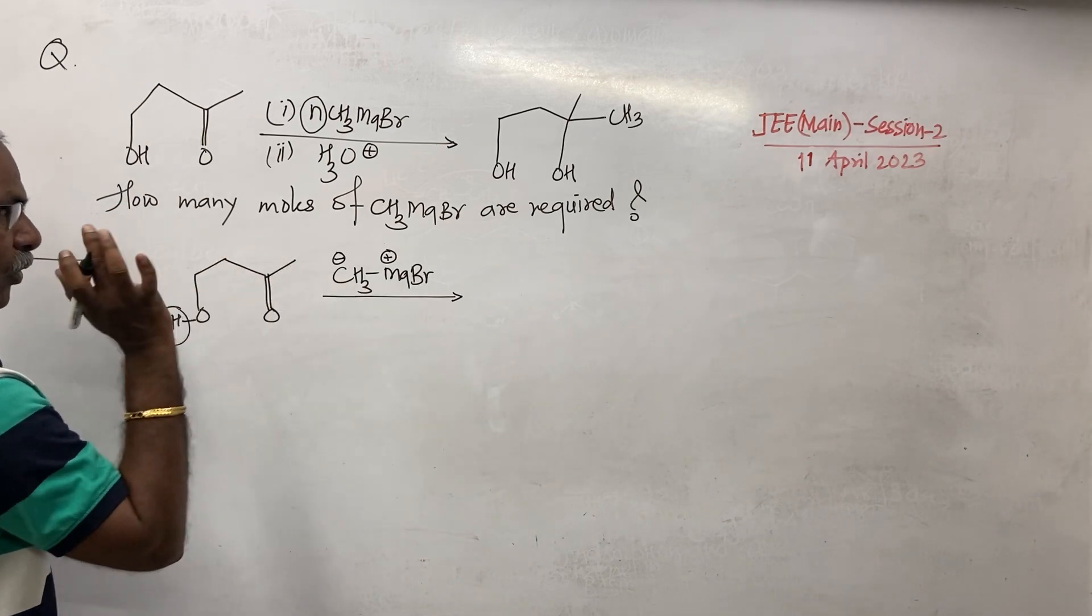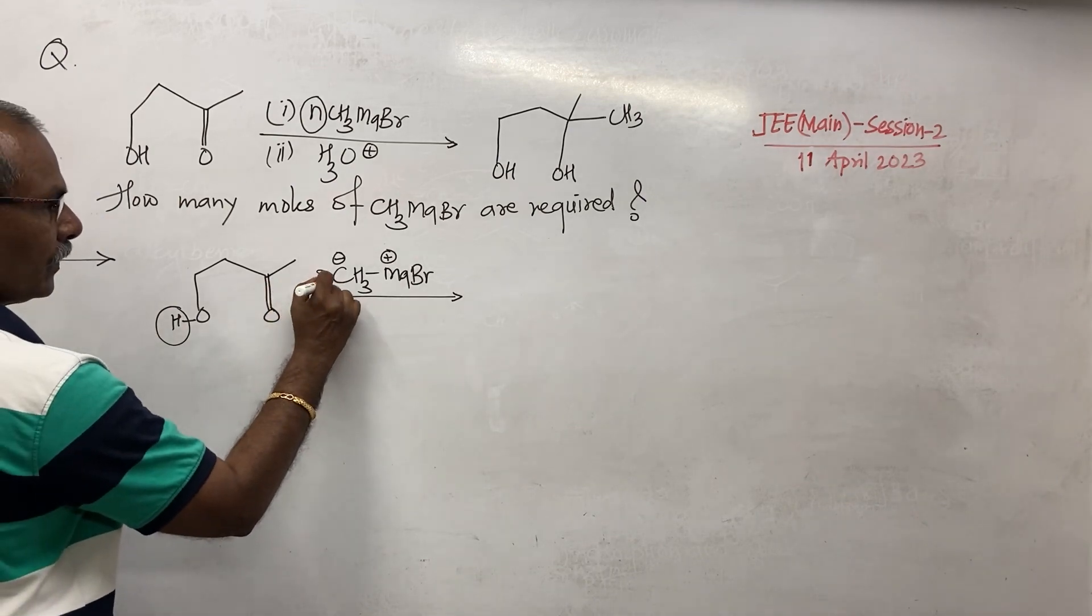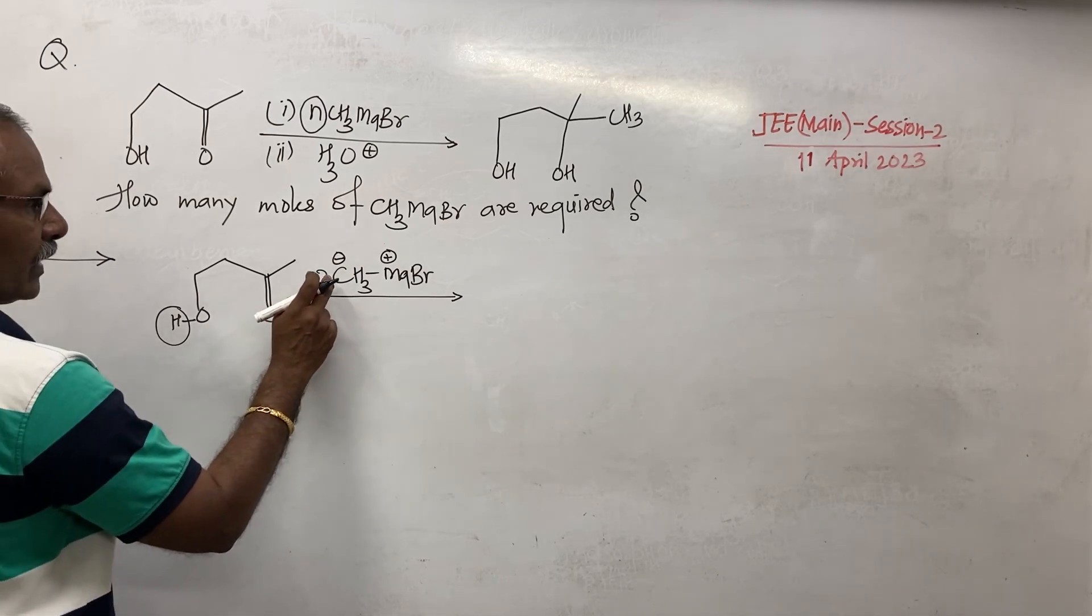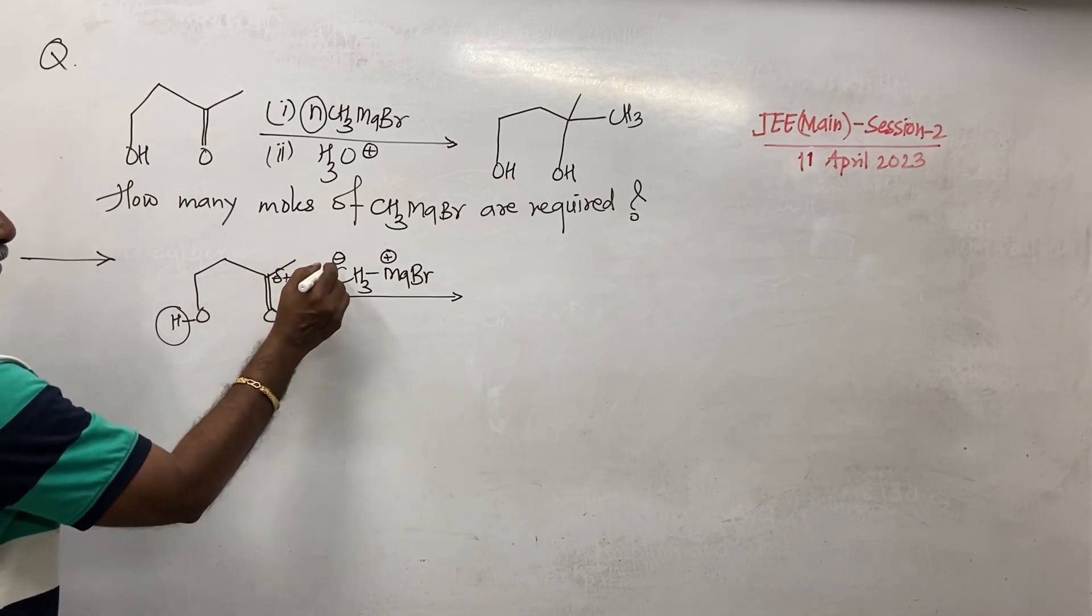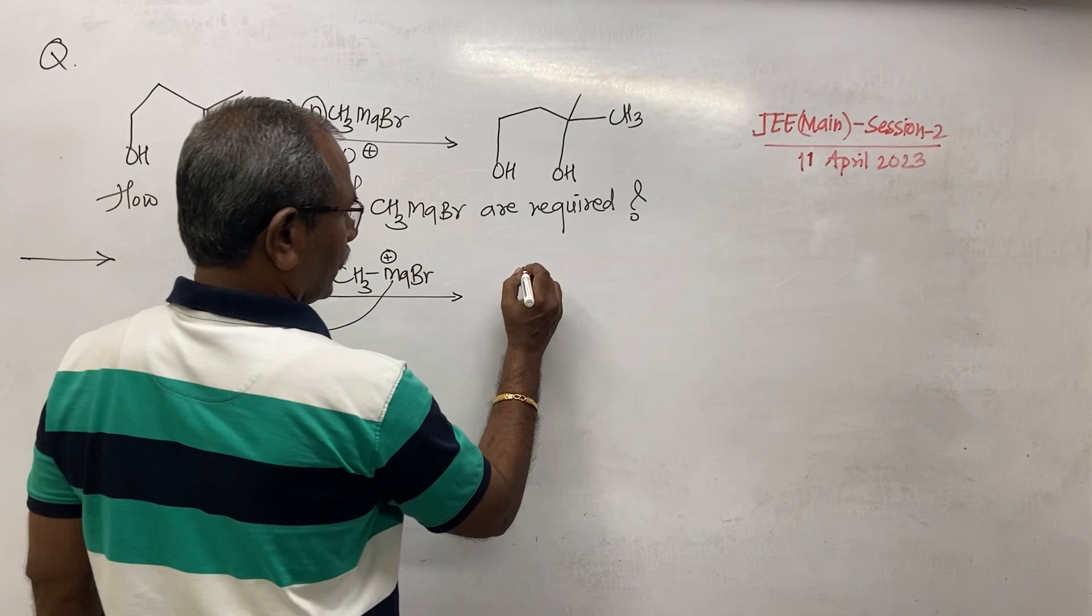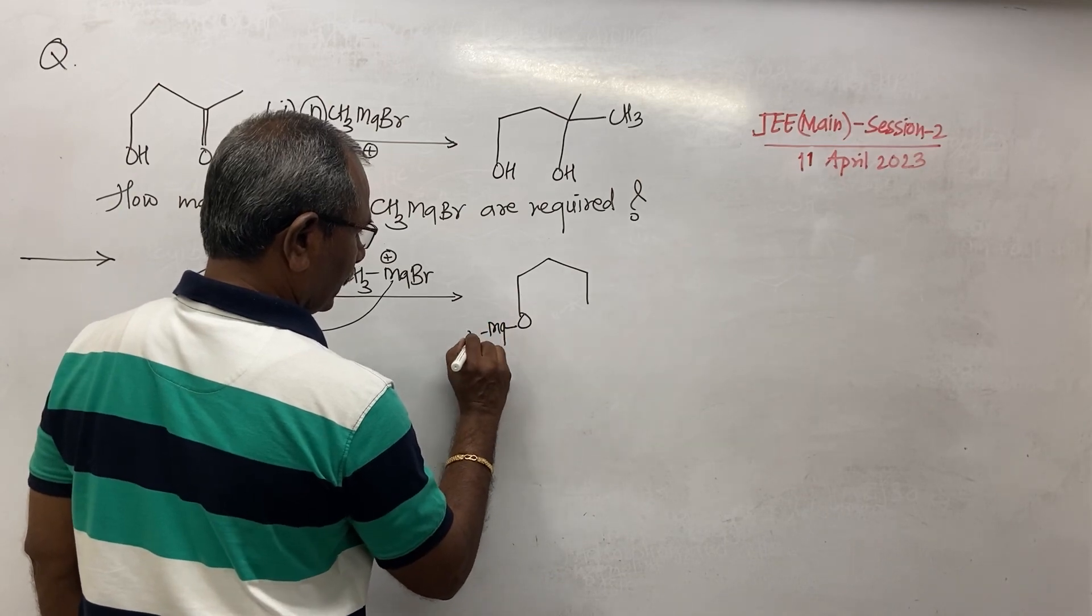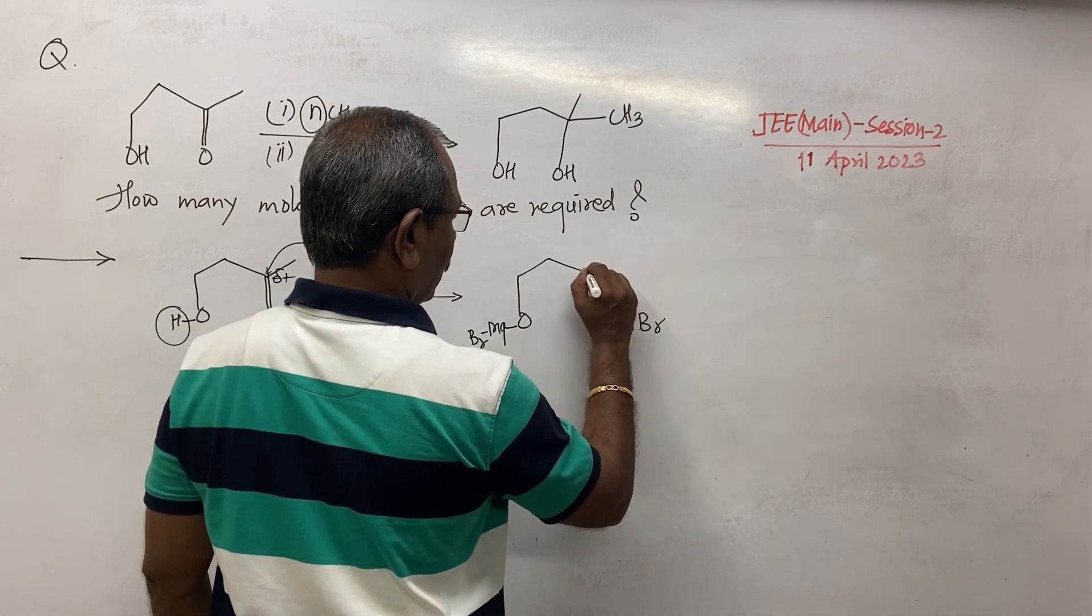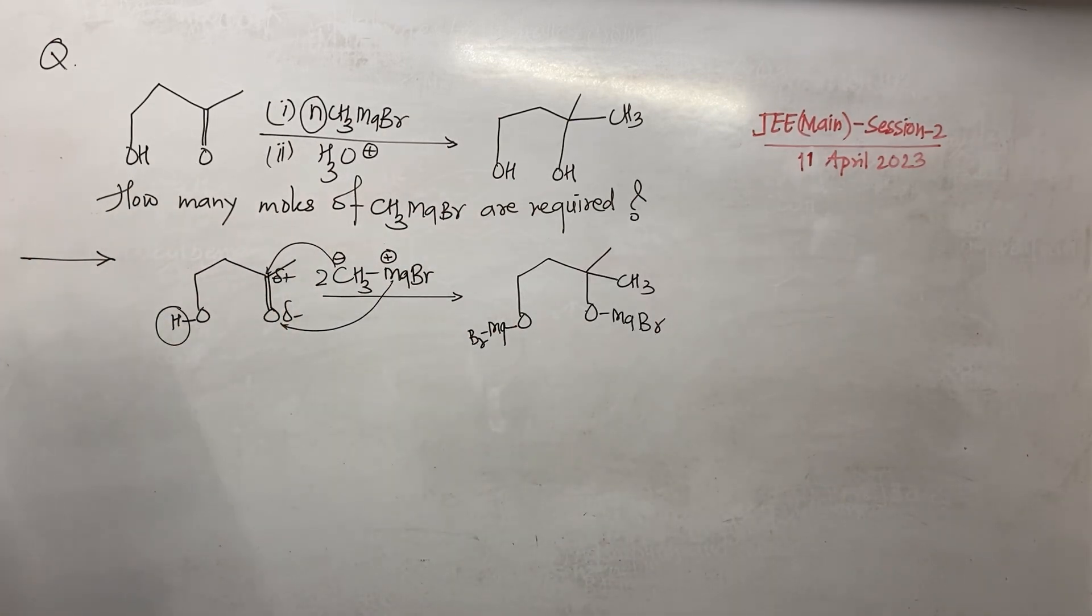This is the 1 mole which is required. Here C double bond O is present. So second mole of methyl magnesium bromide adds to this carbonyl group. So this is partial positive charge and this is partial negative charge. So this carbon gets attached to this carbon atom and magnesium gets attached. Here O MgBr, one methyl group is added and this is the first methyl group present in the reactant.